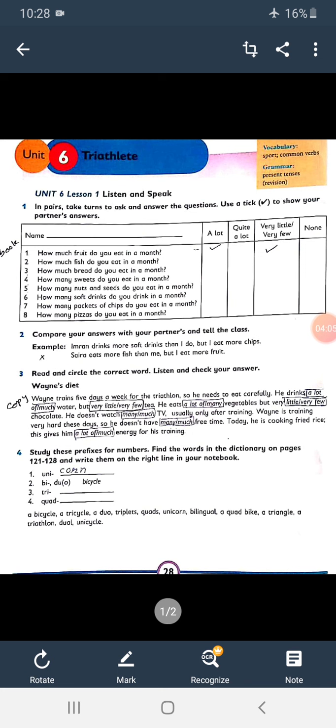Unicorn, next one is unicycle. Number two: bicycle, bilingual. Number three: triangle, tricycle, triathlon. Number four: quad bike. And there is only one quad bike. Write down these blanks from their word bank.